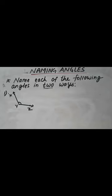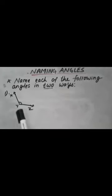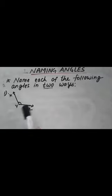Here I have drawn one angle. Now you are supposed to write the name of this angle in two ways. So how can we write the name of this angle in two ways? Let's see.